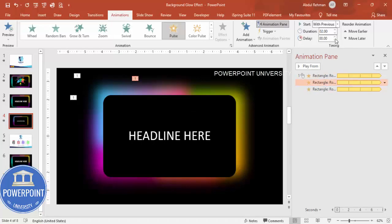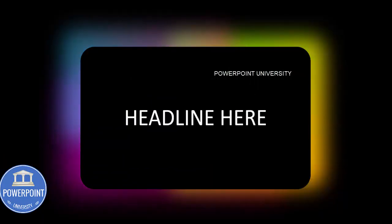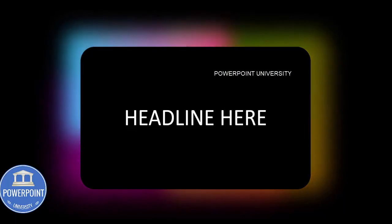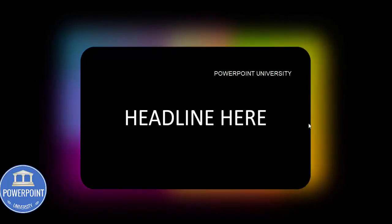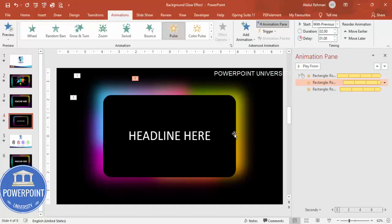When you play it, you can see the glow effect pulsing. If you want, you can adjust the timings — add a slight delay so they don't all pulse at the same time, creating a staggered effect. Depending on your requirement, you can increase or decrease the timing options and choose different colors as well.